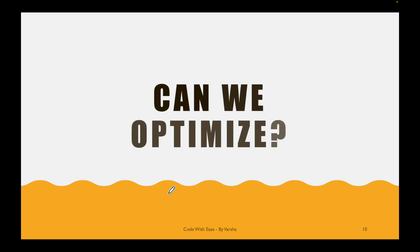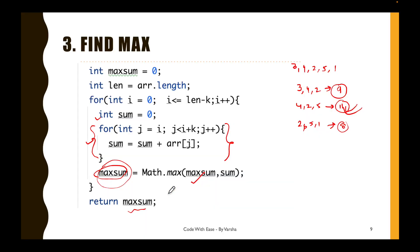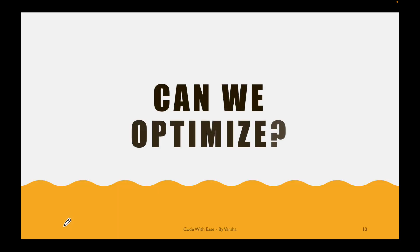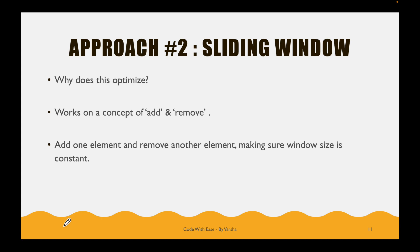Now, can we optimize this? If you notice, we have a nested for loop — one for loop inside another — giving a time complexity of O(n²). That is the reason we want to optimize, and this is where we learn about the sliding window algorithm.